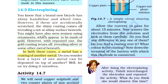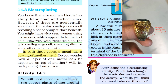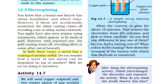You might have also seen women using ornaments which appear to be made of gold. In both these cases — the bicycle and the ornaments — a metal has a coating of another metal on it. This process of coating one metal on another is called electroplating.